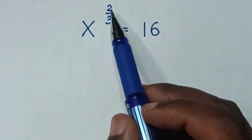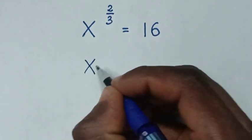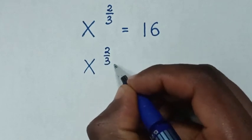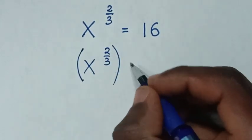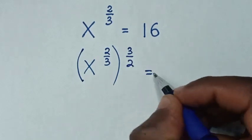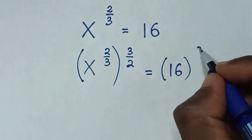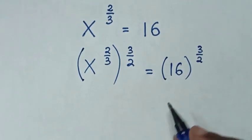So first we power by the reciprocal of 2 over 3 on both sides. Then from x to the power of 2 over 3 in brackets, we power by 3 over 2, which equals 16 in brackets, also powered by 3 over 2 on both sides.